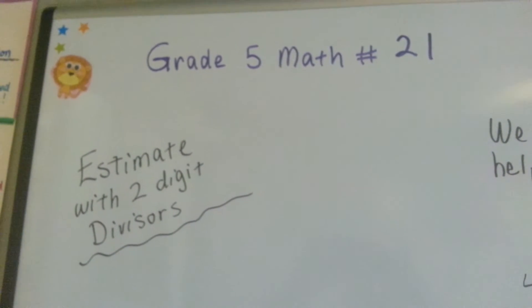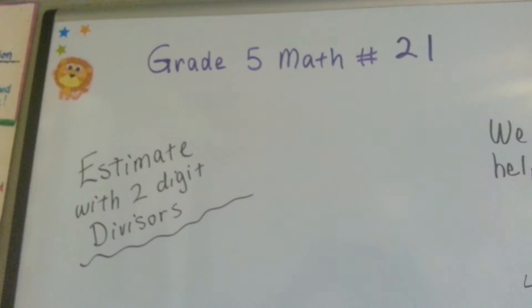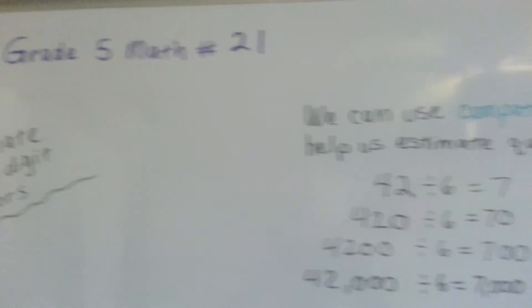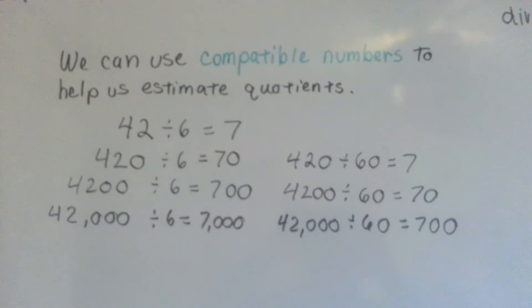Grade 5 math number 21. Estimate with two-digit divisors. We can actually use compatible numbers to help us estimate quotients.